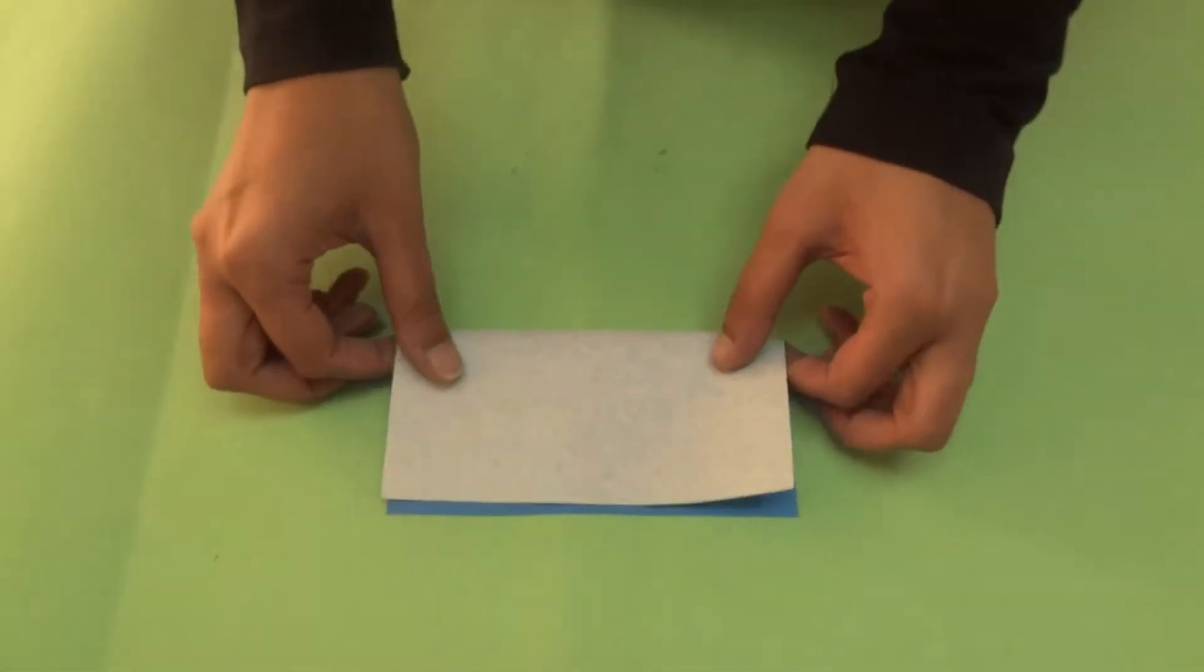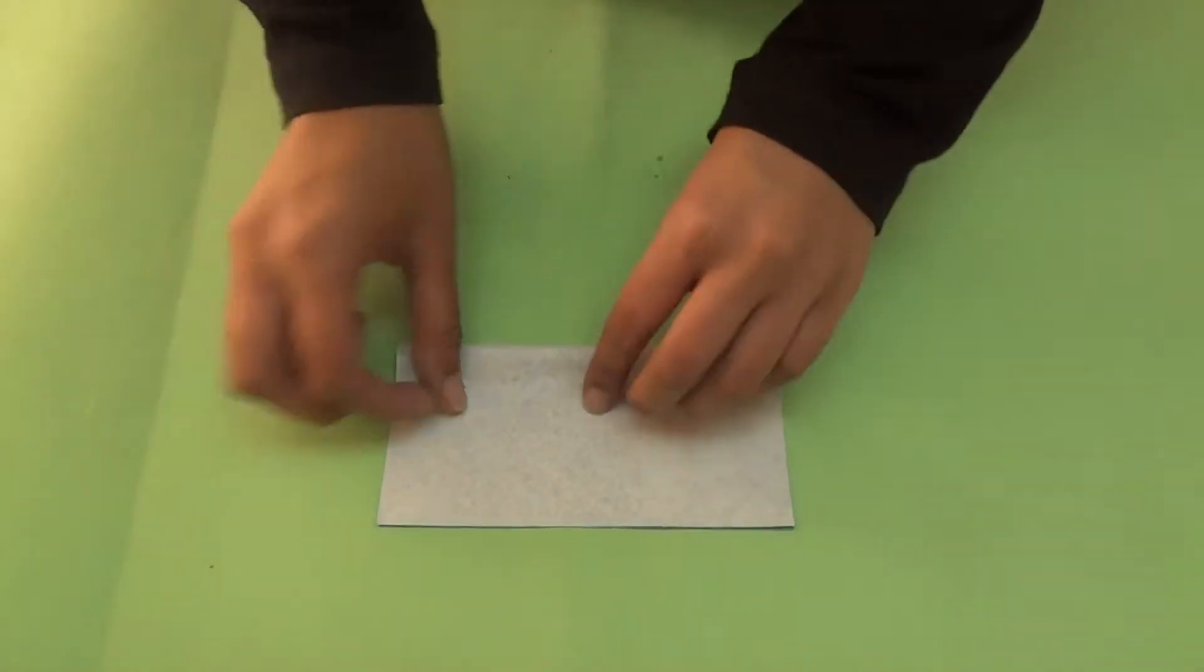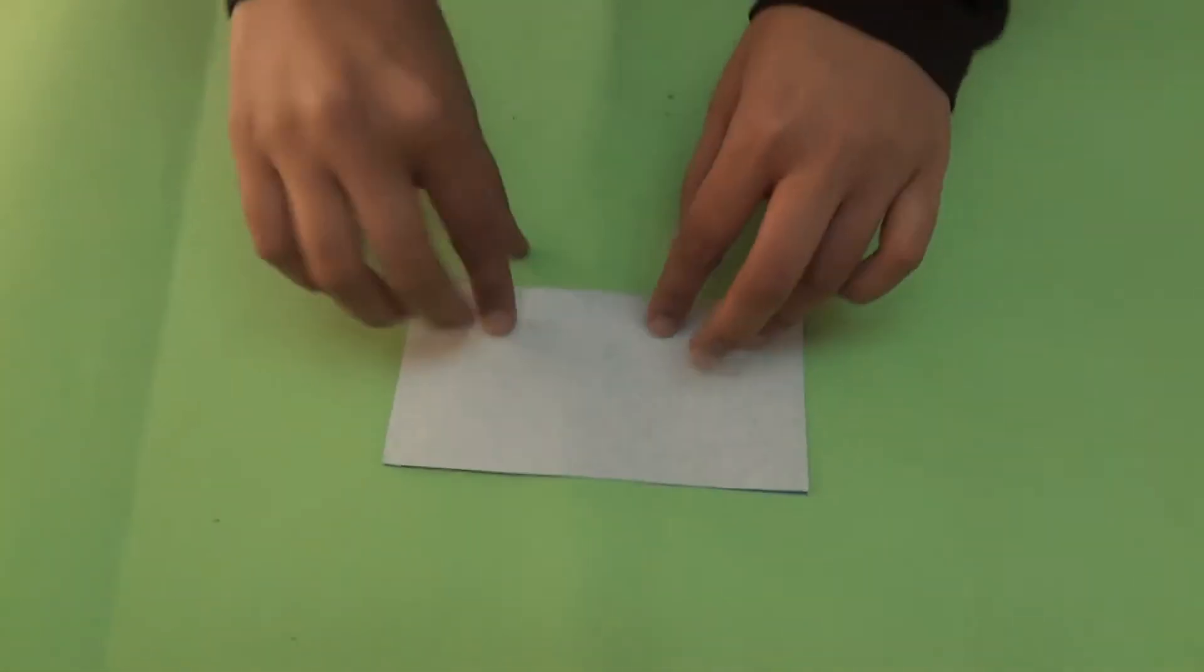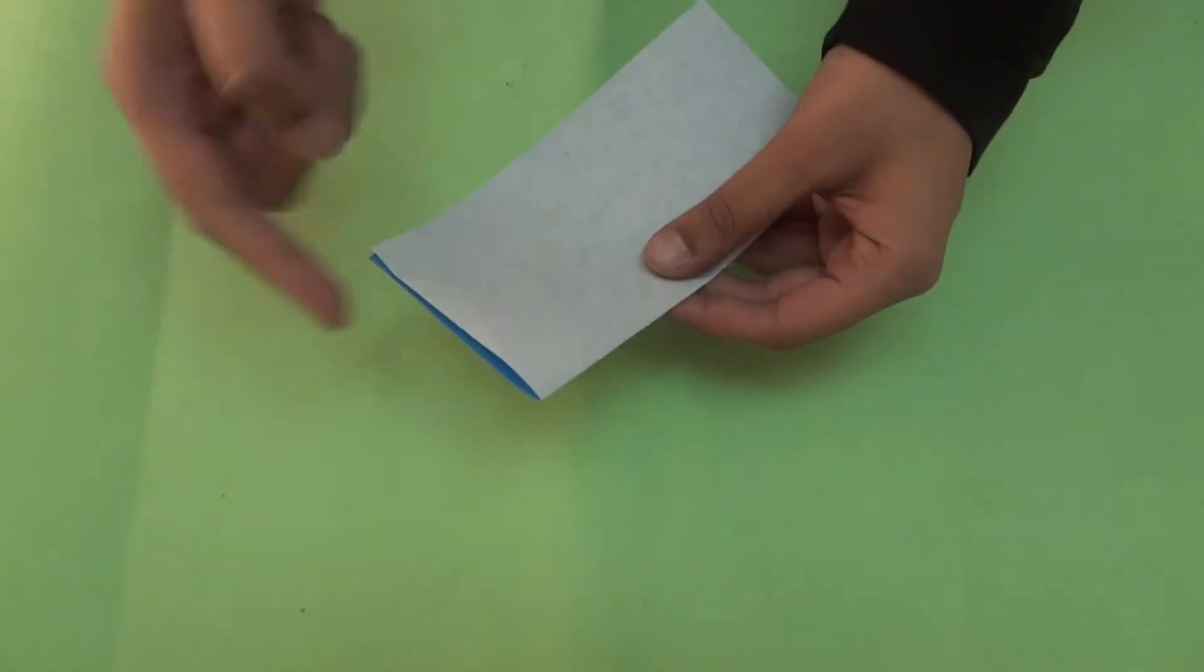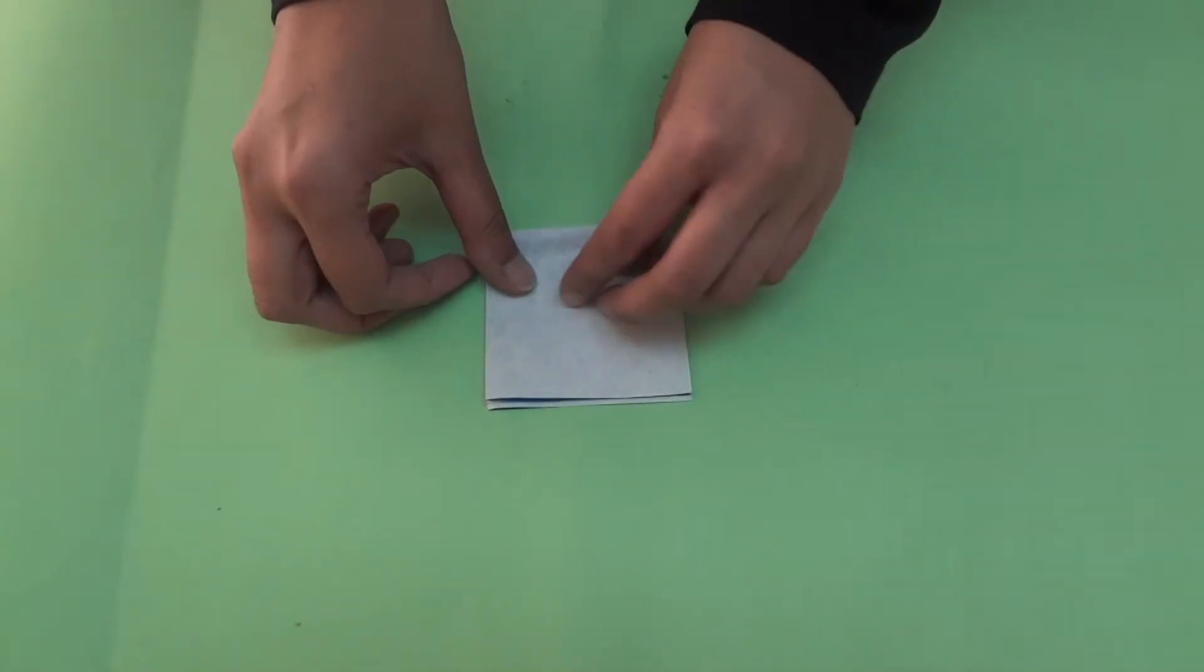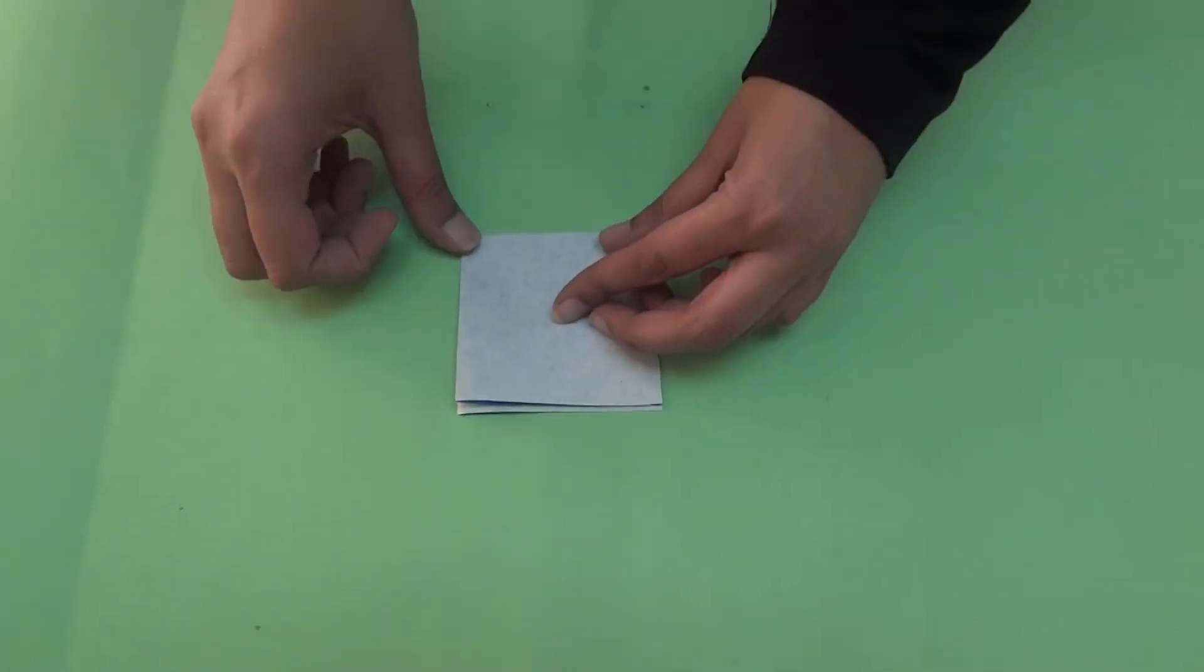First of all, fold your origami paper into half. The white side should be outside. Another fold like a hanky.